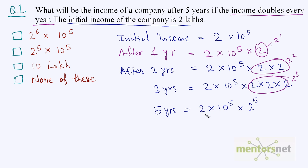Now this is 2 (from the initial amount) and this is 2 raise to 5, so this will be equal to 2 raise to 6 times 10 raise to power 5. So the answer is option 1.